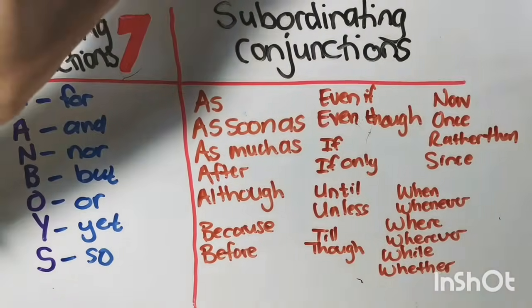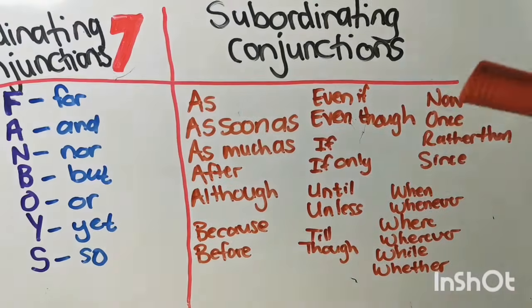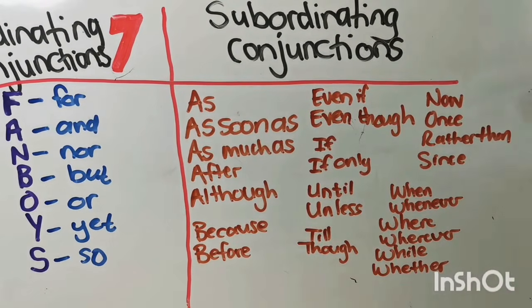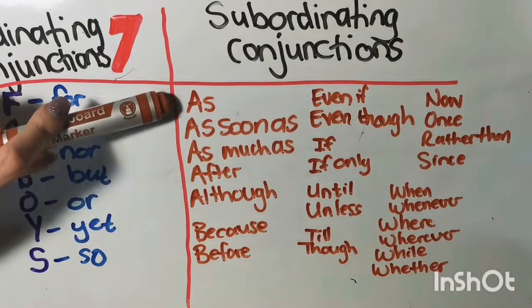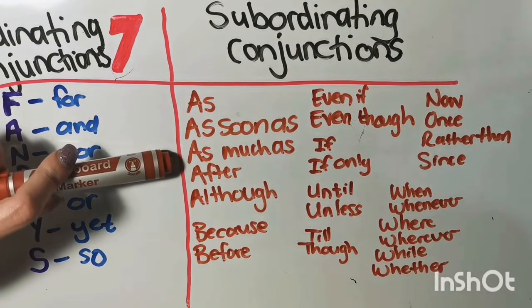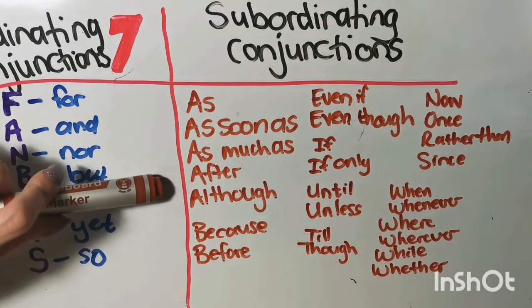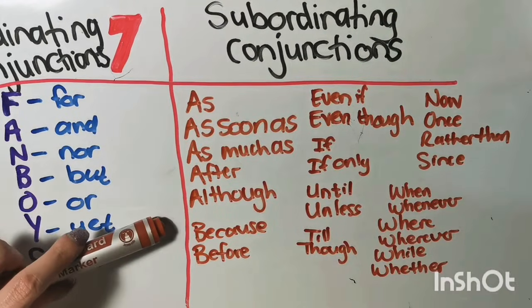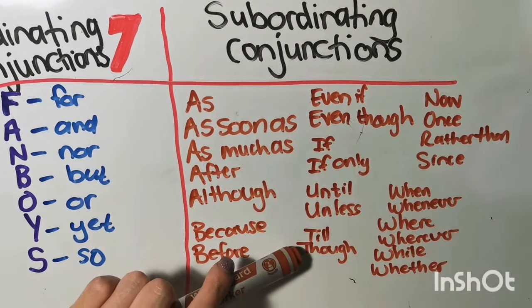Now, we have our subordinating conjunctions. I already wrote them down because there are quite a lot of them. But we have AS, AS SOON AS, AS MUCH AS, AFTER, ALTHO. You can remember ALTHO and THO together.